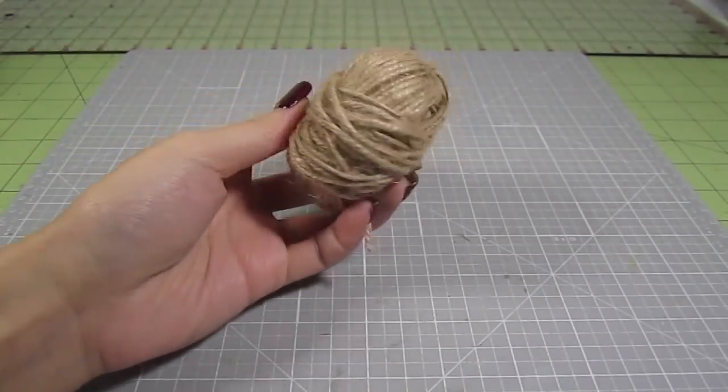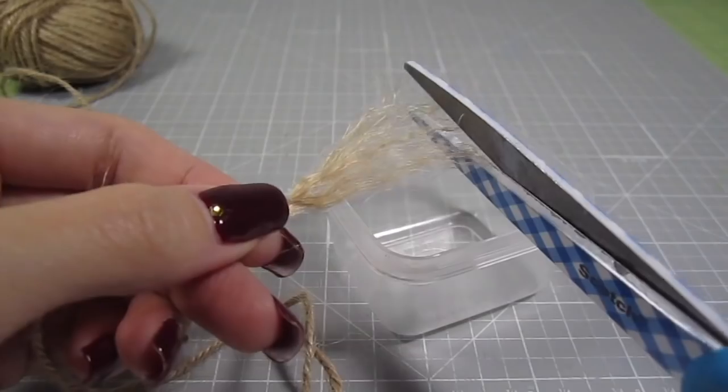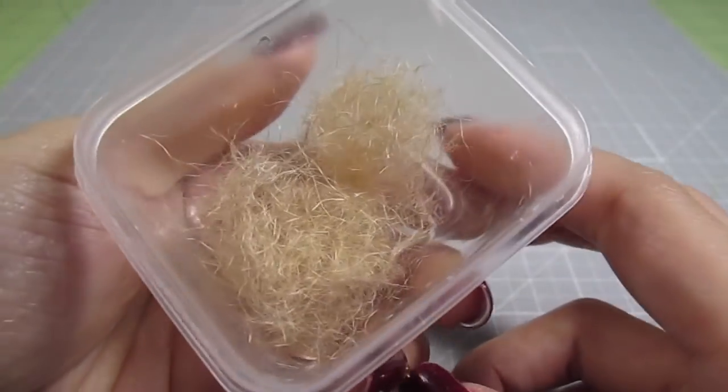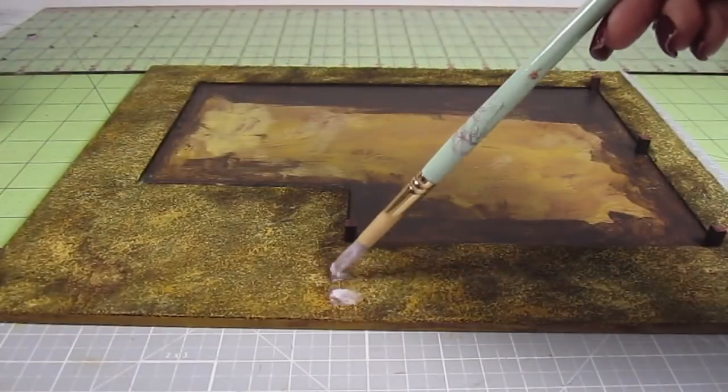For some hay, I take some twine, unravel it, and trim off some short pieces. Then I just glue them to the grass.